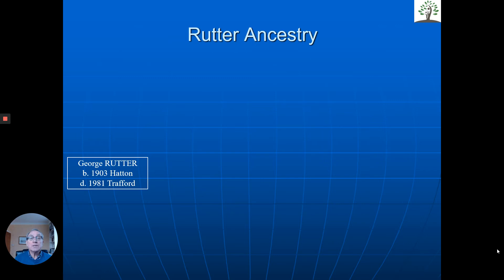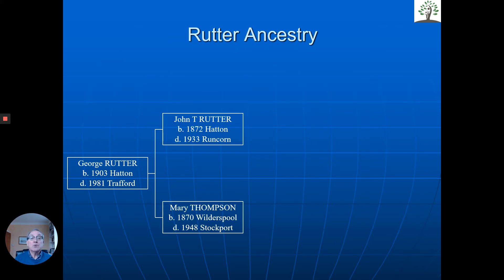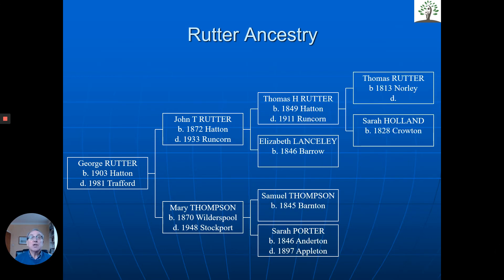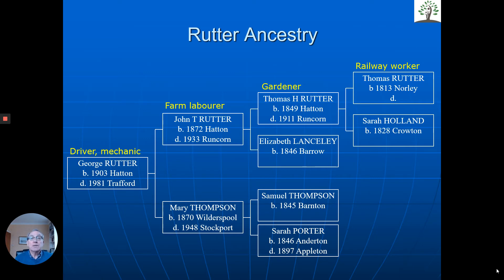Here we have the Rutter family. George Rutter was born in 1903 in Hatton, Cheshire. His parents also came from Cheshire — the Rutters stayed in Cheshire for a number of generations, which wasn't all that common given the Industrial Revolution. Thomas Rutter was a railway worker — he'd been a farm worker before and would have been one of the first to work on the railways as they were built around the country. His son Thomas was a gardener, his son John was a farm labourer, and George Rutter was a driver and mechanic. All sorts of jobs where you could find employment in your local area.